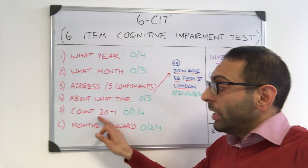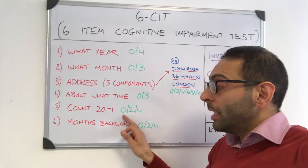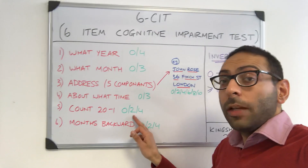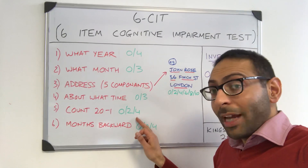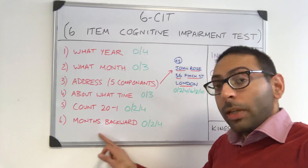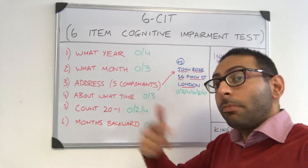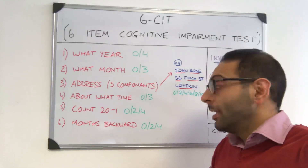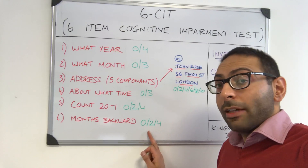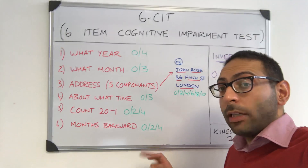Number five: can you count backwards from twenty to one? Completely correct is zero, one error is two, and more than one error is four. Number six: can you count the months backwards? Again, completely correct is zero, one error is two, and more than one error is four.